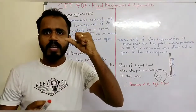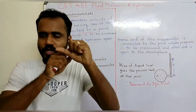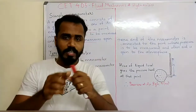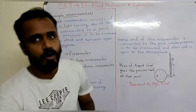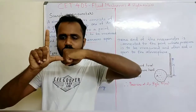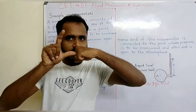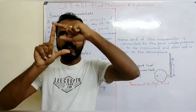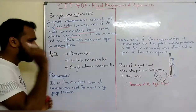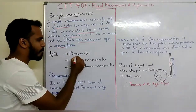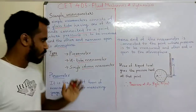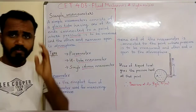There is a pipe with water flow. If you want to measure the pressure in the pipe, you connect a glass tube at that point. The other end is open to the atmosphere. Simple manometers are classified into the piezometer, U-tube manometer, and single column manometer.